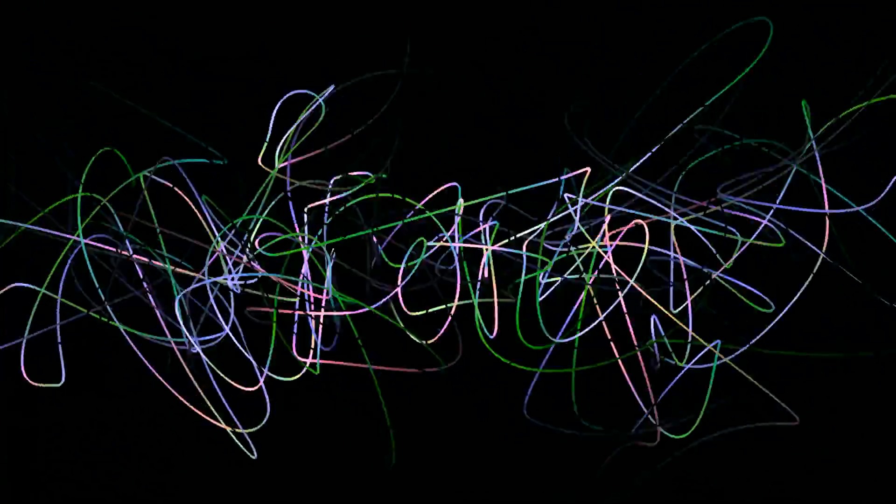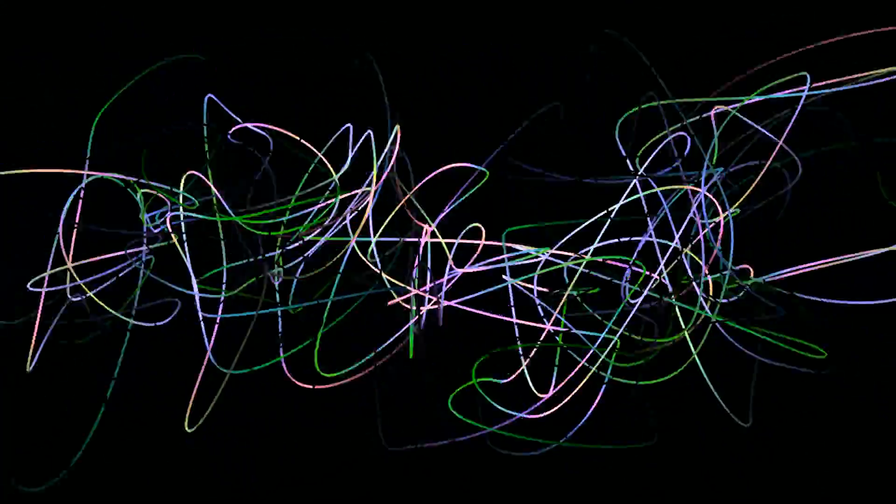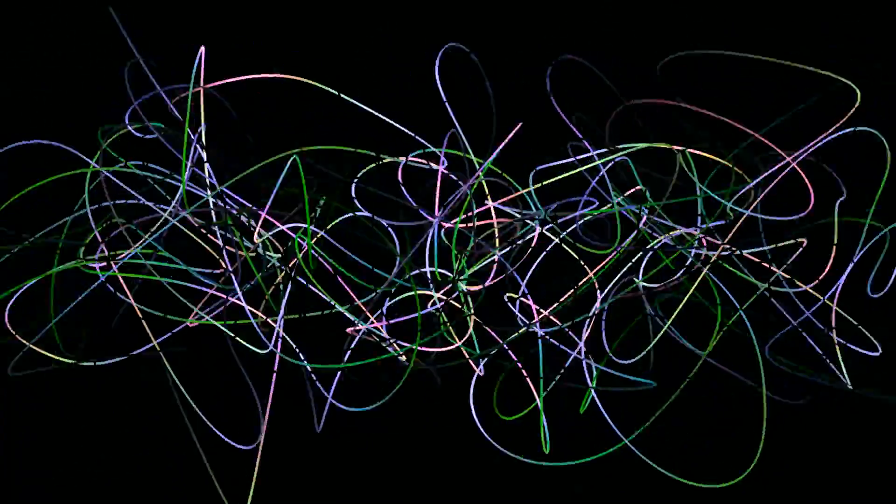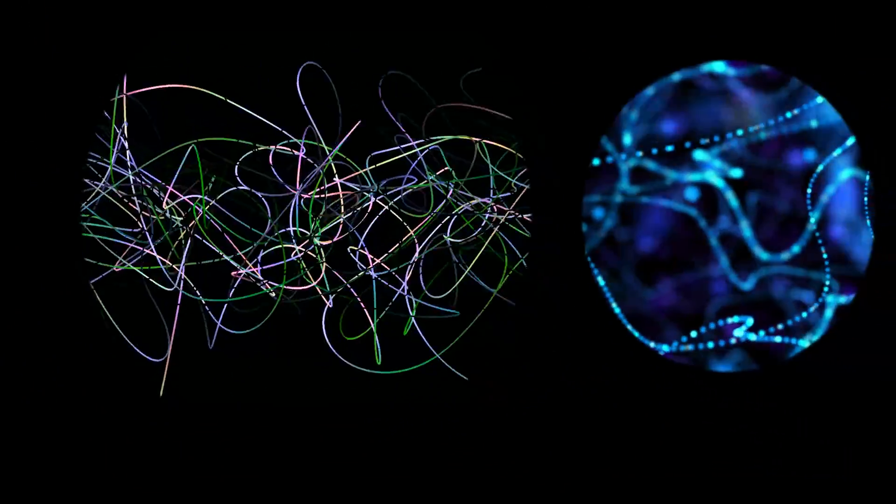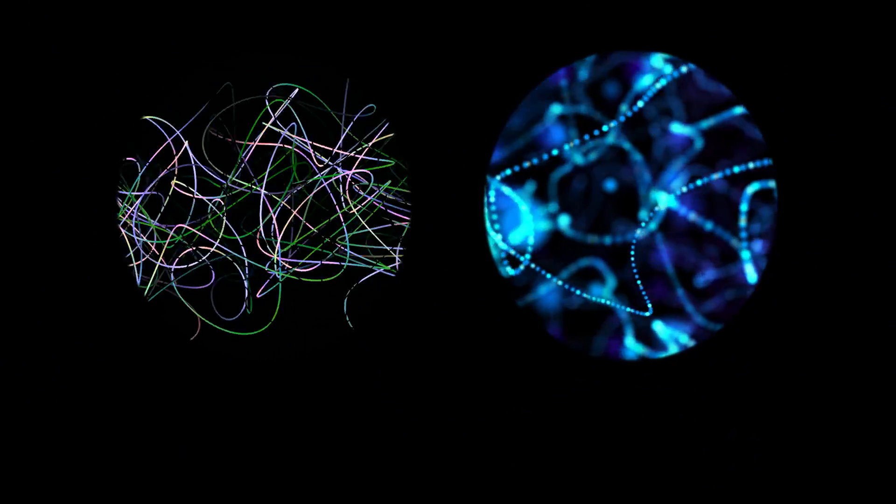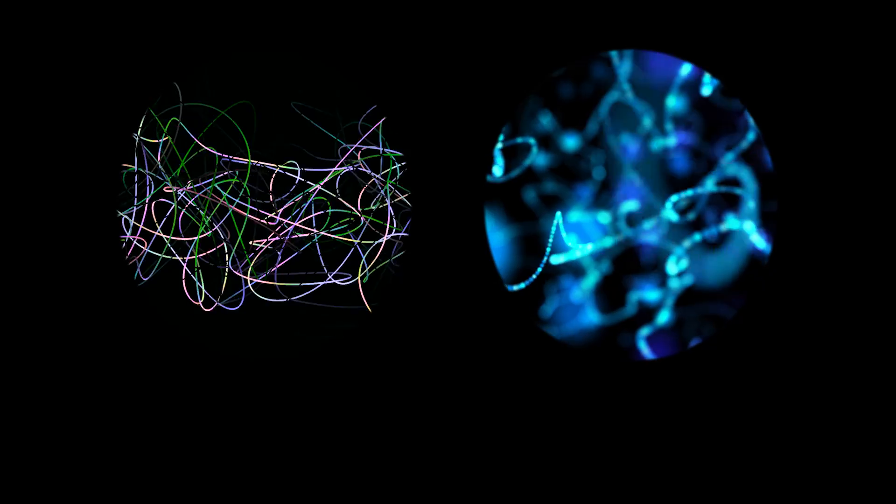String theory completely changes the standard description of the universe by replacing all matter and force particles with tiny, vibrating strings that twist and turn in complicated ways. These strings are what appear to us as particles. Depending on the way they twist and turn, they gain the properties of different elements.